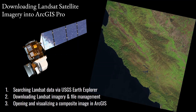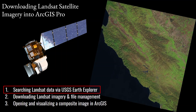In this video, I want to cover some of the basics of accessing, downloading, and visualizing Landsat imagery in ArcGIS Pro. I'm going to split what would be one video into three parts. This first video will focus on carrying out a search for the image you want in the USGS Earth Explorer geo portal, then how you download and manage those files, and finally how to open and visualize a composite image in ArcGIS — something like this false color image of the central coast of California.